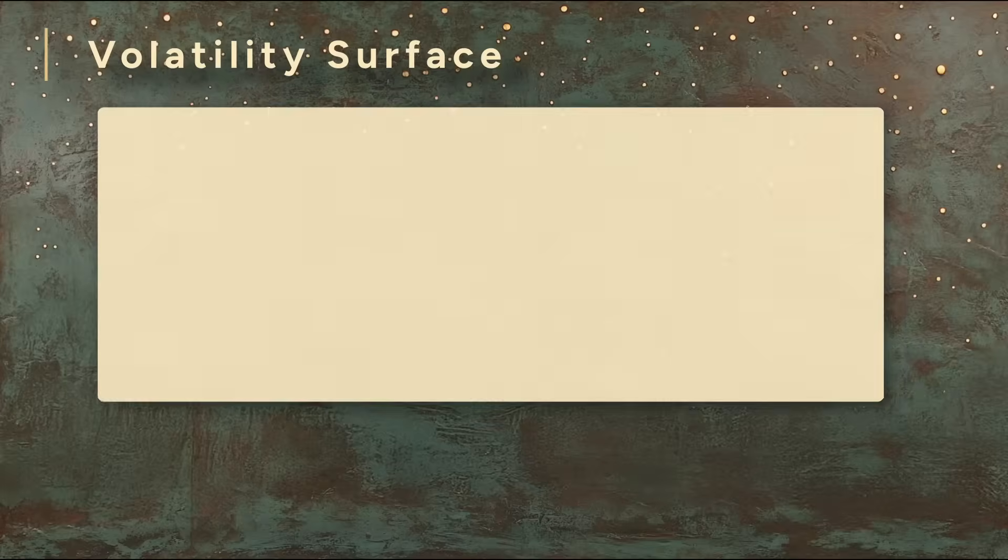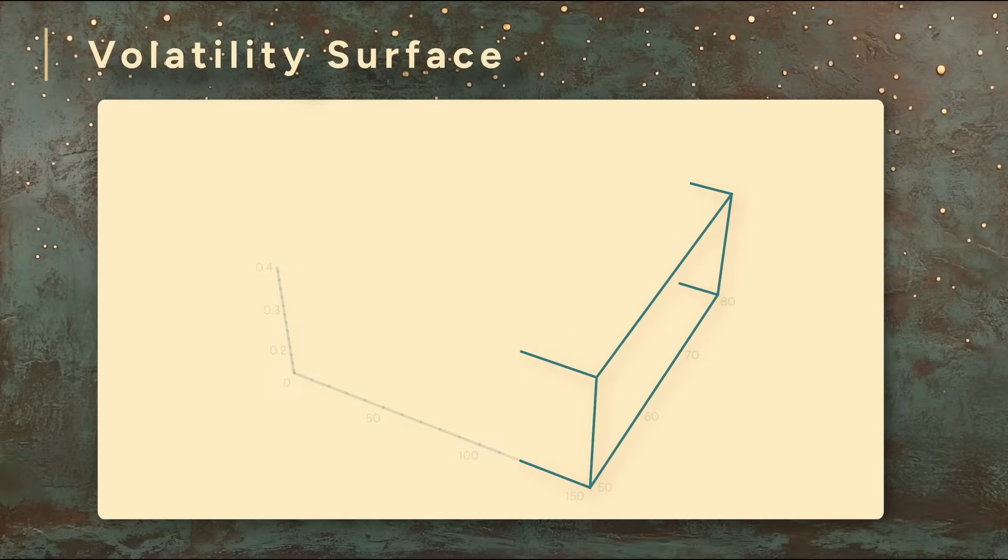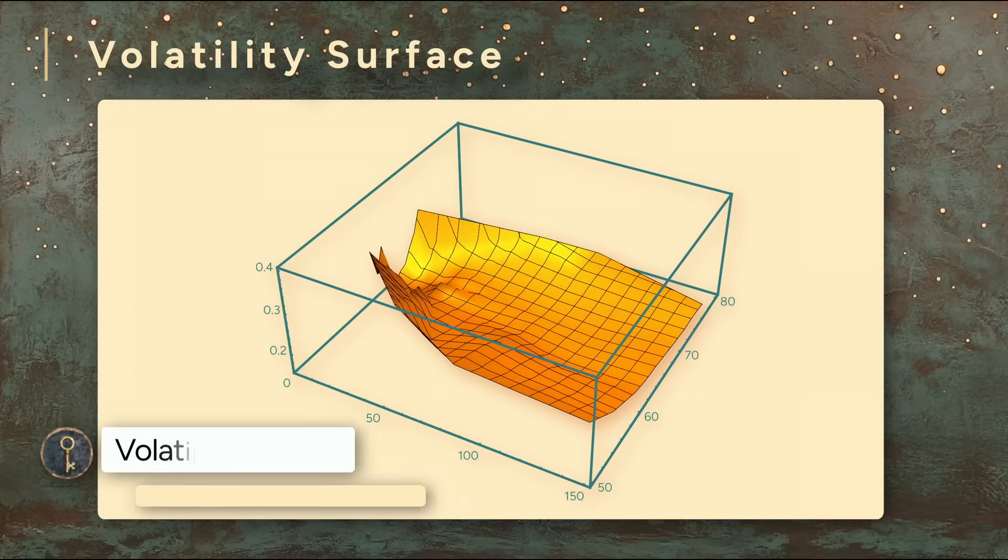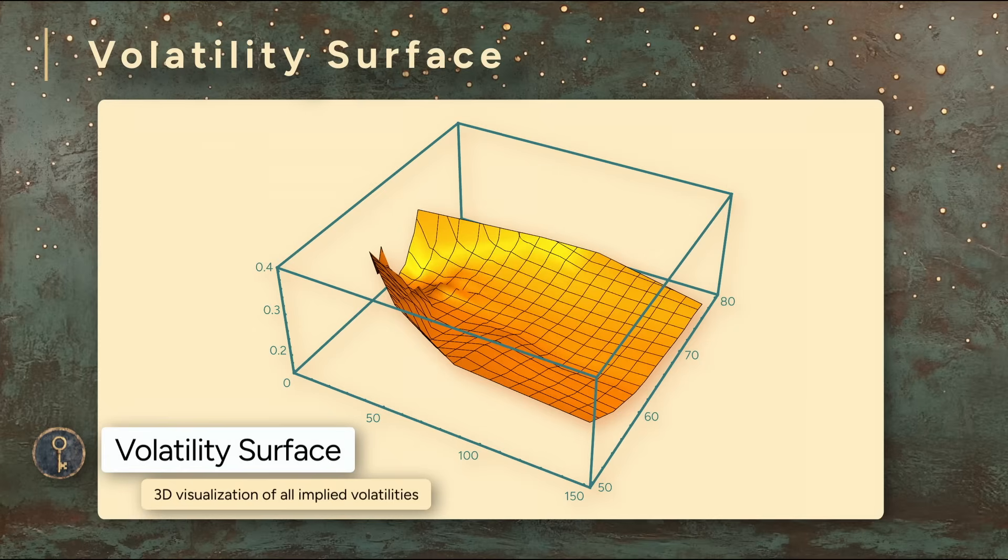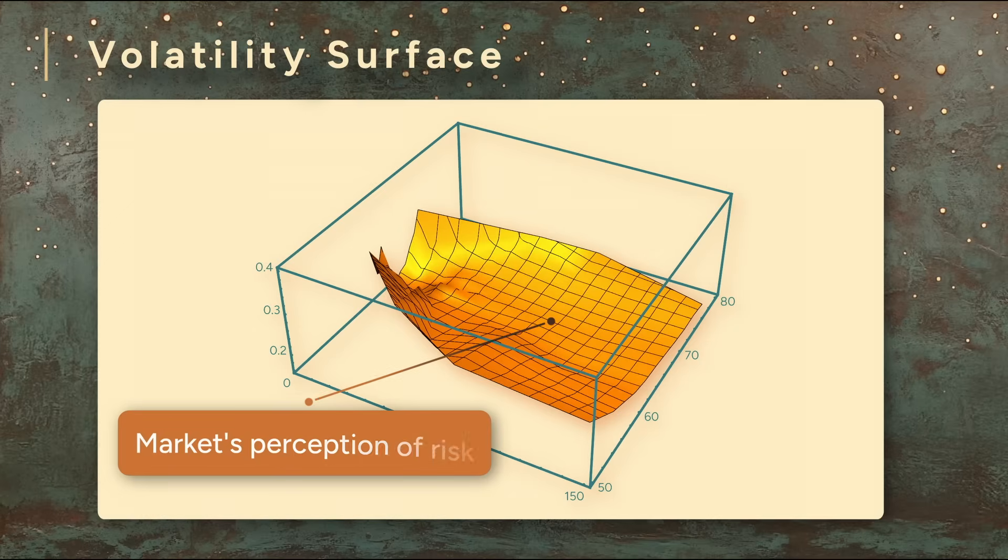To understand these differences, we create a plot of all the implied volatilities. The result is a 3D visualization we call the volatility surface. Think of the surface as a heat map of how the market perceives risk across all these different conditions. Once we have this surface, we can identify which parts look normal and which parts look unusual.